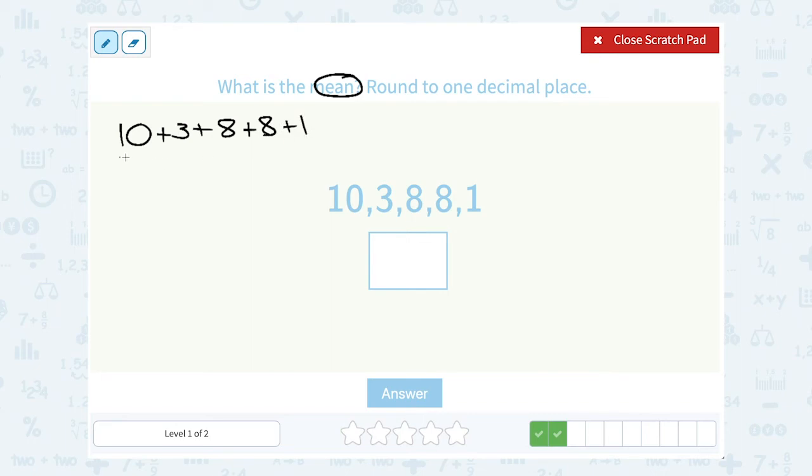And then whatever I get as my answer, I'm going to divide it by how many numbers there were: 1, 2, 3, 4, 5. So let's add 10 plus 3 plus 8 plus 8 plus 1 - adds up to a total of 30. And then I need to divide that by 5. 30 divided by 5 gives me 6, so that means our mean or average is 6.